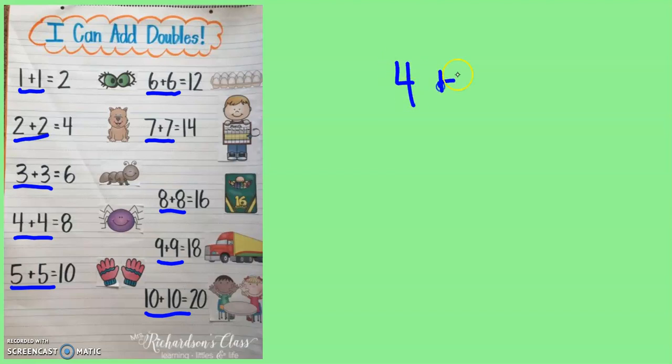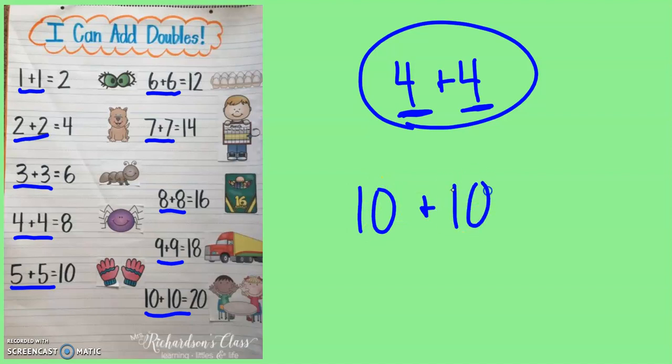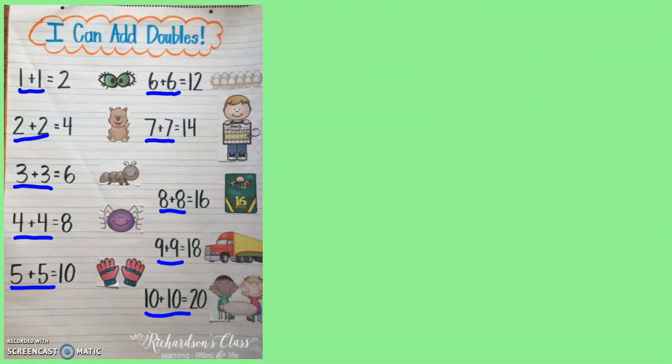So four plus four is a double. The number is not here just one time, it's here two times. Ten plus ten is a double. You might even see bigger numbers as doubles. One hundred plus one hundred is a double. It's when we take one number and we multiply it by two. We double it. If you look at the poster on the page you will see some pictures to help you think about what these doubles are.